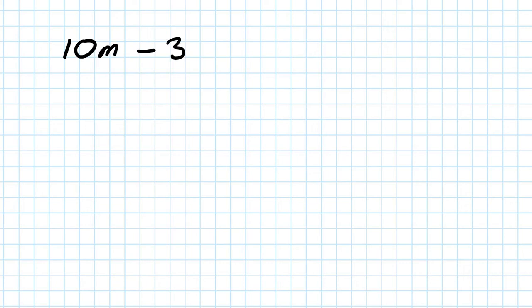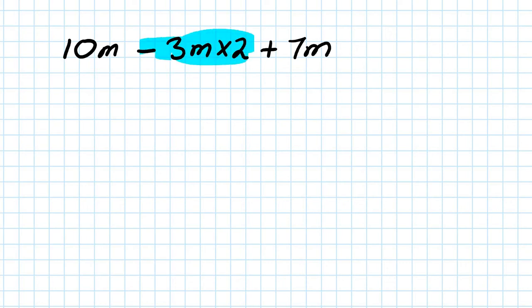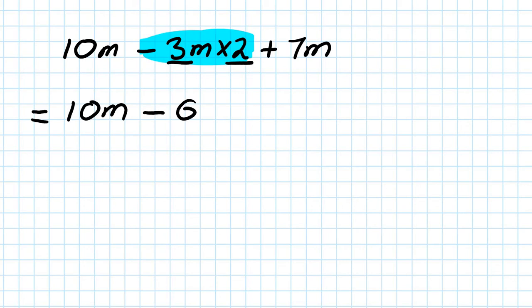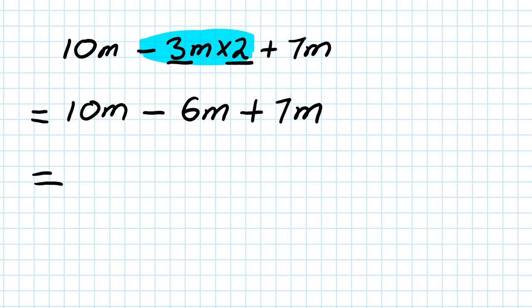Next one: 10m minus 3m times 2, plus 7m. Step number 1, this is multiplication — simplify it first. 3 times 2 is 6, so minus 6m. Then write down 7m. So the answer is 10 minus 6 is 4, 4 plus 7 is 11 — so your answer is 11m.